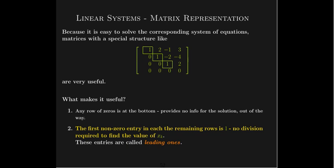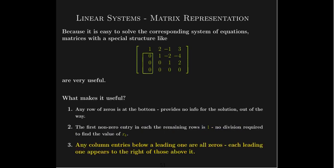These 1s are called leading 1s — that is, the first non-zero entry when it's a 1 is called a leading 1. Any entry below a leading 1 in that column is 0. That allows us to work our way backwards: in the third row I only have to worry about x3; now I know x3, so in the second row I only have to worry about finding x2; and then in the first row I only need to find x1. The leading 1s, as you go down, get moved to the right.